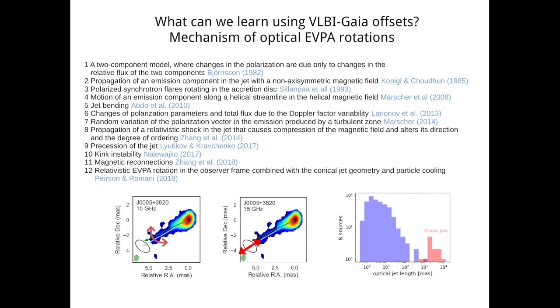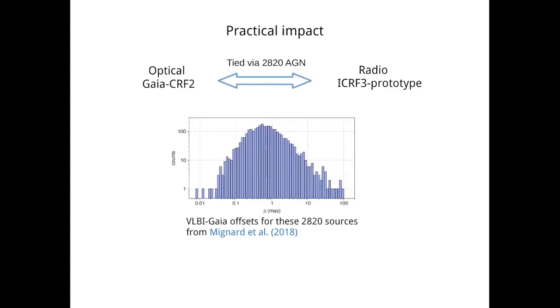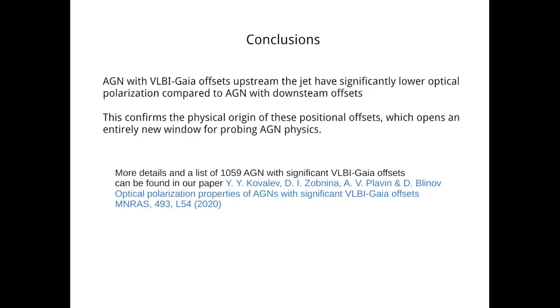The studies of VLBI-Gaia offsets in AGN can have a very important practical implication. The point here is that the optical reference frame created by Gaia is tied to the radio international celestial reference frame through coordinates of less than 3000 most stable and most compact active galactic nuclei. But we know that almost half of these most stable sources have VLBI to Gaia offsets that exceed 1 milliarcsecond. So studying their astrophysical reasons of these offsets and their evolution, we can potentially improve this tie between the two reference frames and increase their accuracy in future.